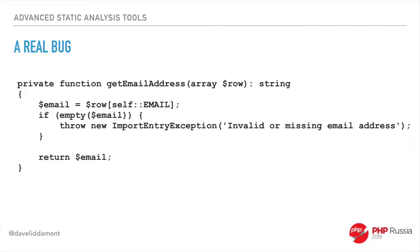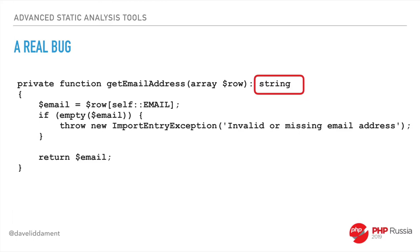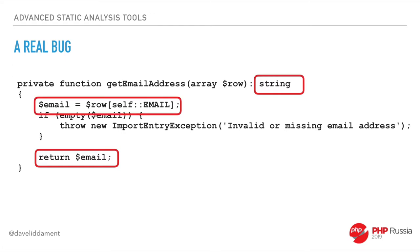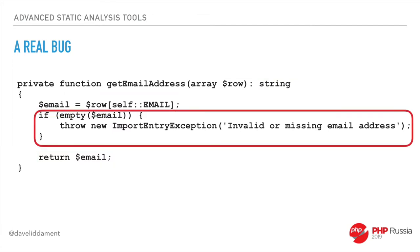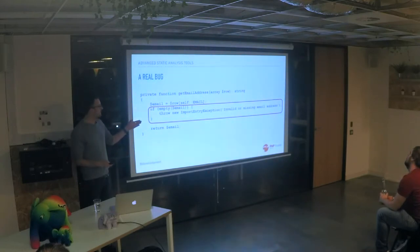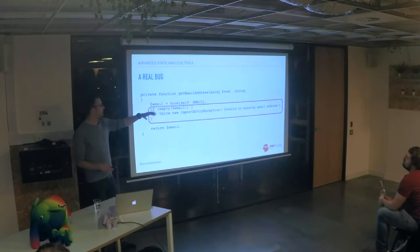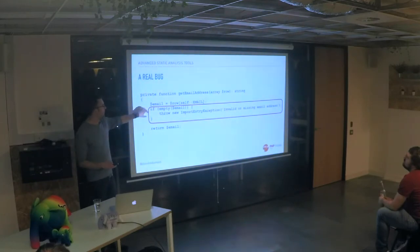A real bug I found: a method called getEmailAddress returning type String, pulling email out of an array from an untrusted YAML source. We check that email isn't empty and throw an exception if it is, but we haven't done any type checking to make sure email genuinely is of type String. There's also the possibility there isn't even a key 'email' in the array. So there's validation missing, and one day that will definitely trip us up — and in fact, it did trip us up.